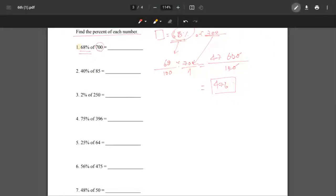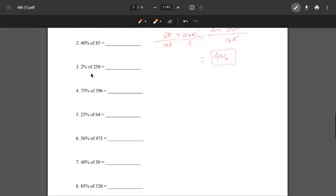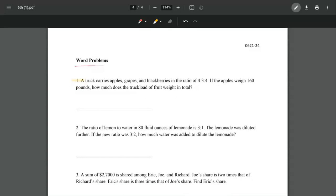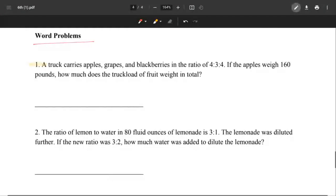Find the percent of each number, and we'll move on to our last page, word problems. We're looking at number one - it's a ratio problem. A truck carries apples, grapes, and blackberries in the ratio of 4:3:4. If the apples weigh 160 pounds, how much does the truckload of fruit weigh in total?